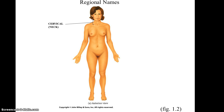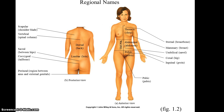In the cervical region there are no sub-regions — my apologies, I'll try to fix that in the future. That was a joke. In the trunk, you have on the anterior side the sternal region for the breastbone.